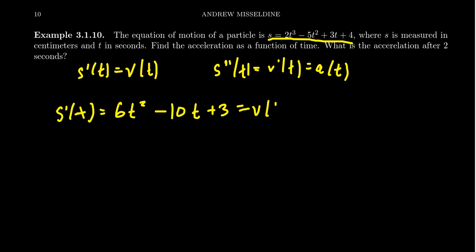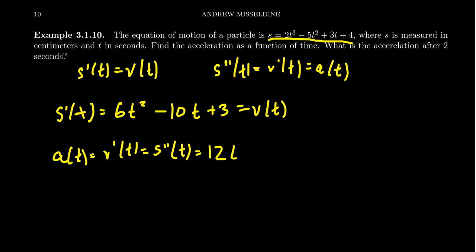Then to find acceleration, we take the derivative of the velocity function, which is the second derivative of position. Taking the derivative of the previous function, we get 6 times 2, which is 12 times t — lowering the power by 1 — then negative 10, because when you take the derivative of t you get back a 1. The derivative of 3 becomes 0. So our acceleration function is 12t minus 10.